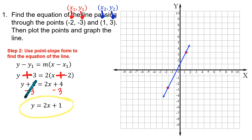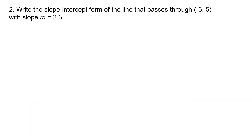Let's try this without the graph. The problem says: write the slope-intercept form of the line that passes through the point negative six comma five with slope M equals 2.3. Write the slope-intercept form means Y by itself with everything else on the other side. I want you to pause the video and take a couple of minutes to see if you can do this on your own.